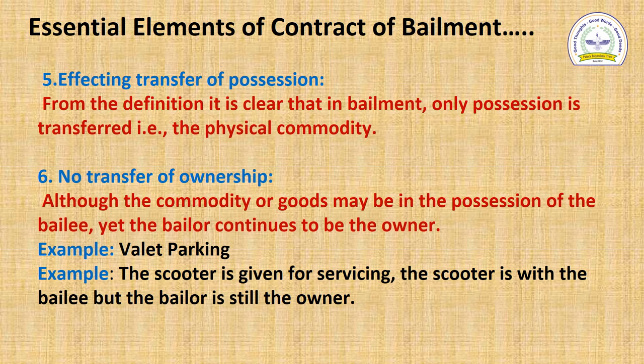The sixth essential element is no transfer of ownership. In bailment, there is only transfer of possession and no transfer of ownership, because though the goods are delivered to the bailee, the bailer continues to be the owner of those goods. For example, when a scooter is given for servicing, the scooter is with the bailee but the bailer is still the owner of it.